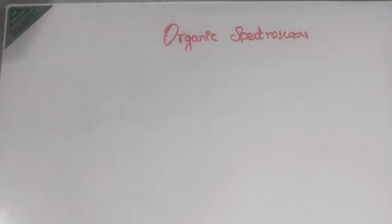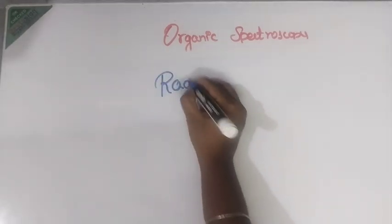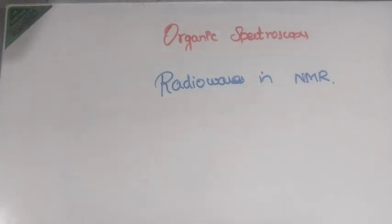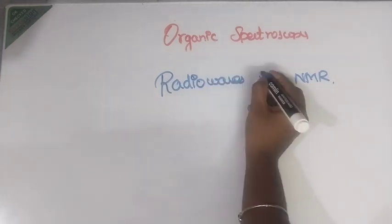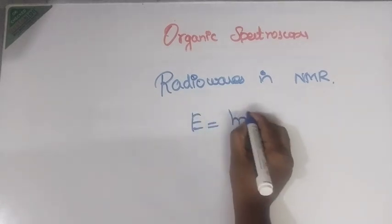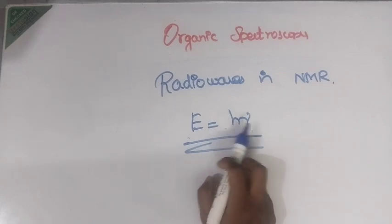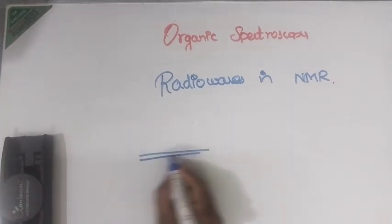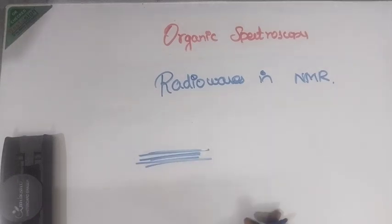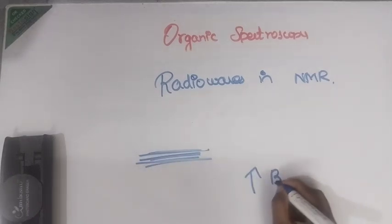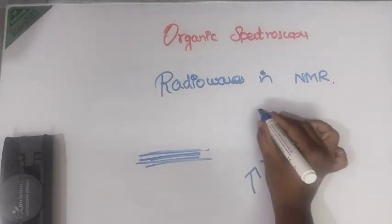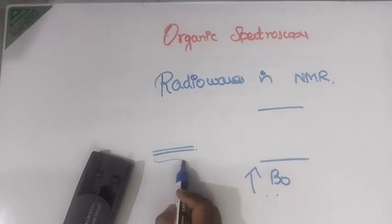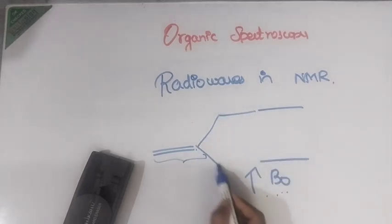We are using radio waves in NMR. You would have studied E = hν, so energy is directly proportional to frequency. Energy levels will be very close to each other initially. But after applying a magnetic field, they will split. If there are only two levels, in the absence of magnetic field they are close together, but in the presence of magnetic field they split apart, creating an energy gap.